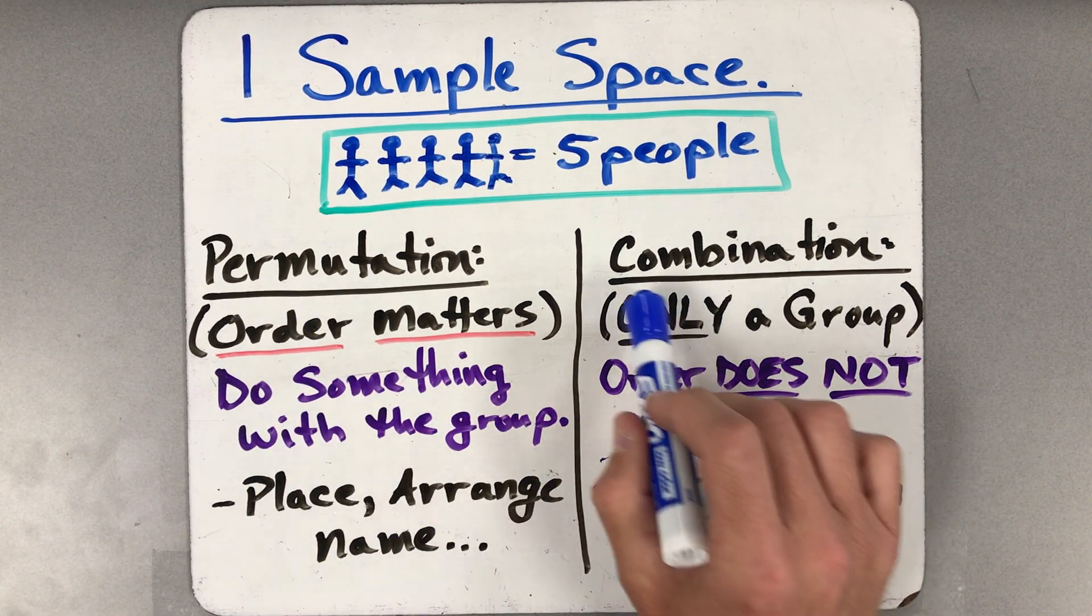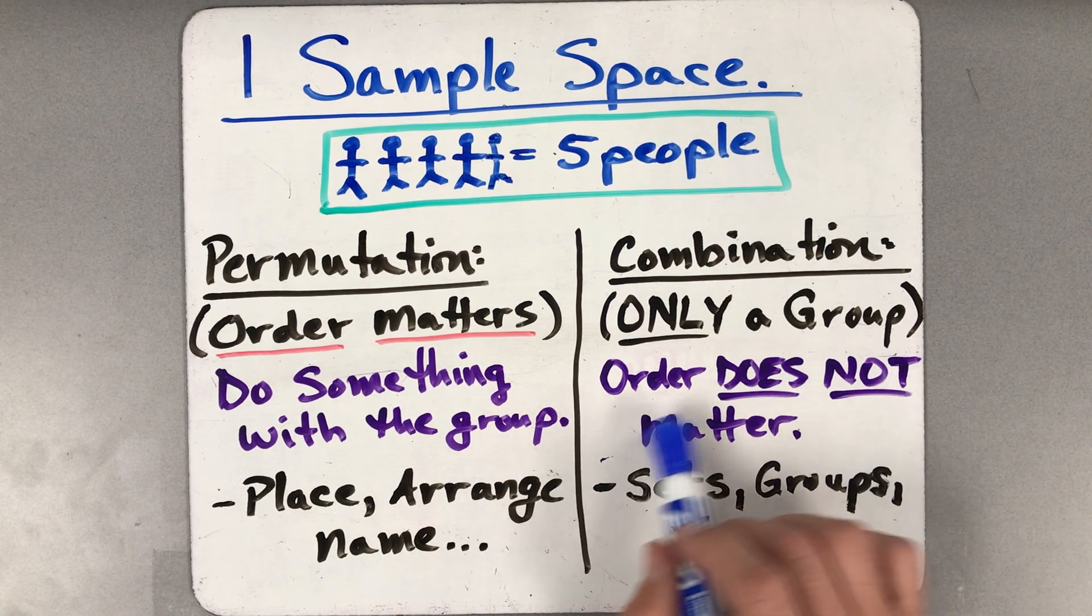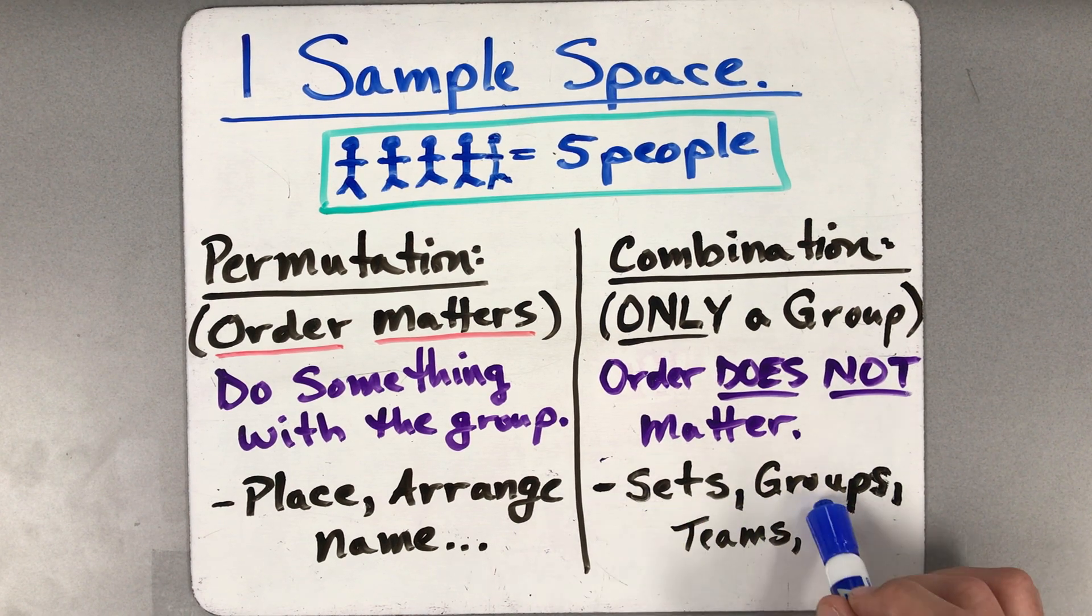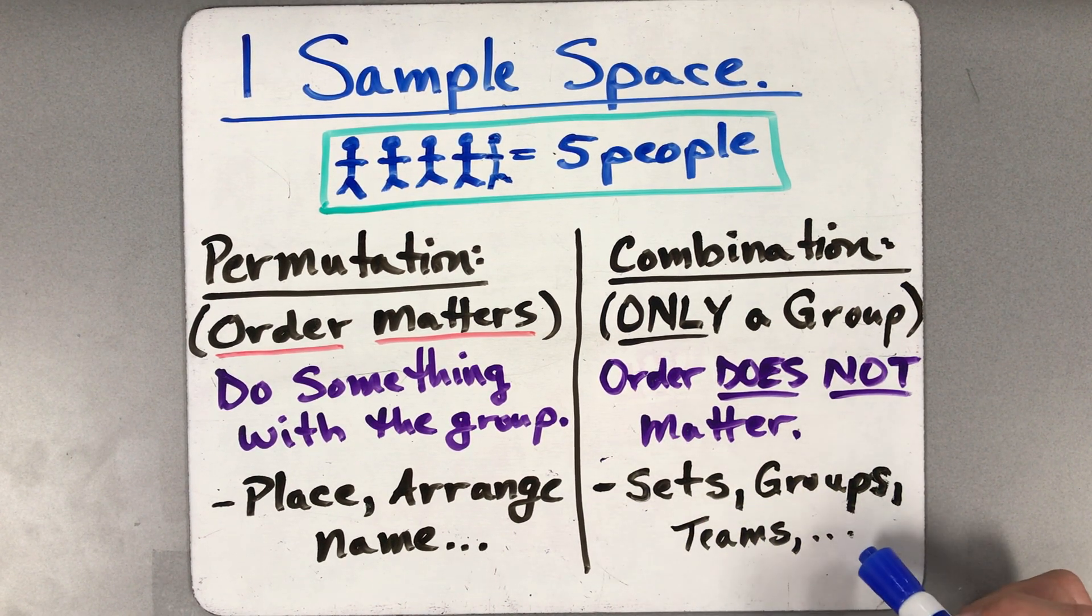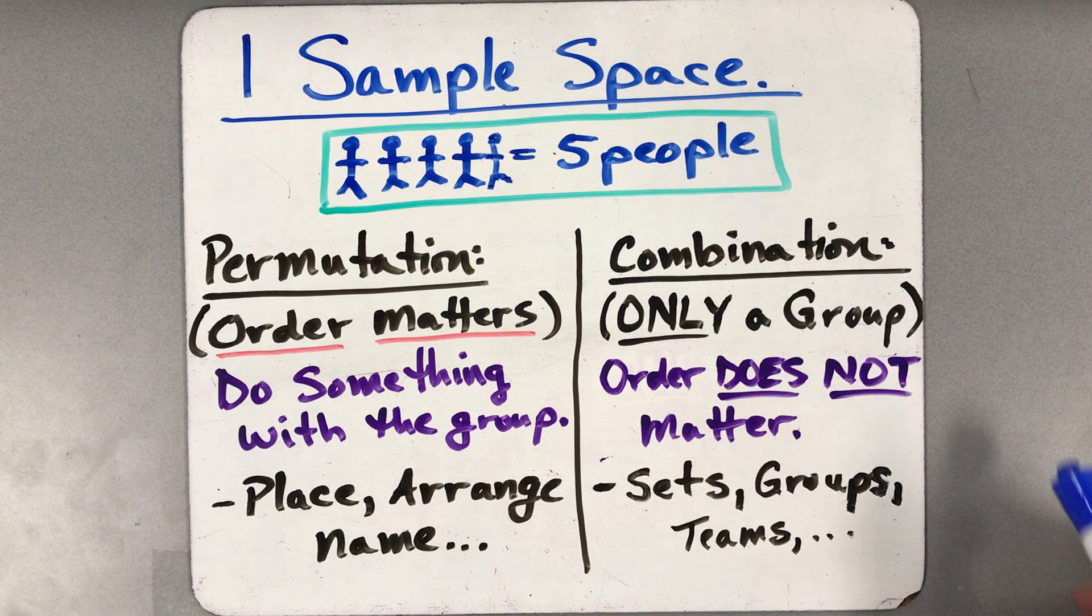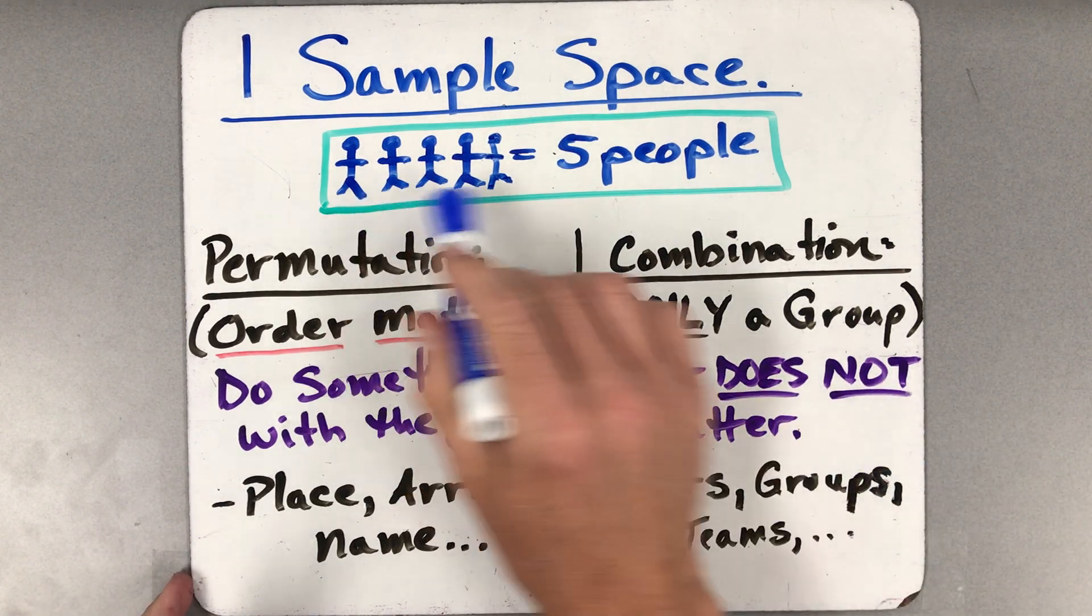If I have a combination, where I only make them a group and nothing else, where the order is not even mentioned or not important, like just taking a set of things, or a group of things, or a team, even possibly committees, groups of things, that's what we're talking about when we talk about combinations. So order is important versus not important of this one sample space.